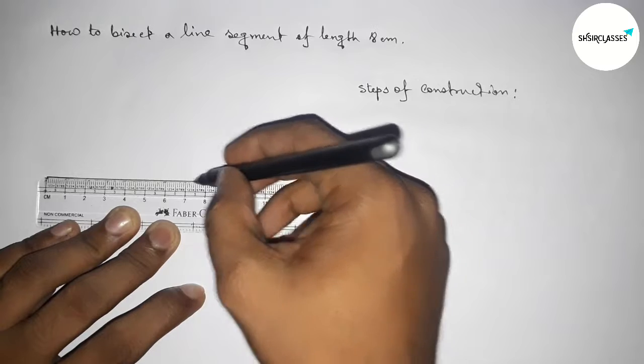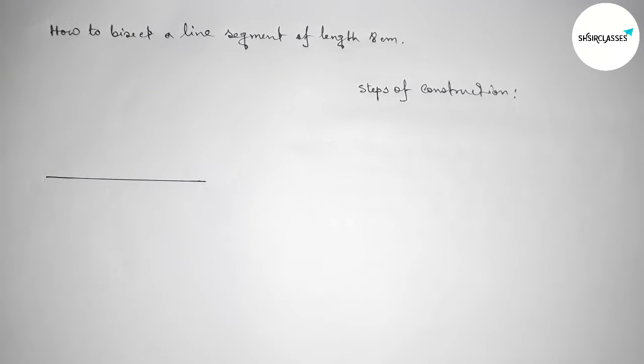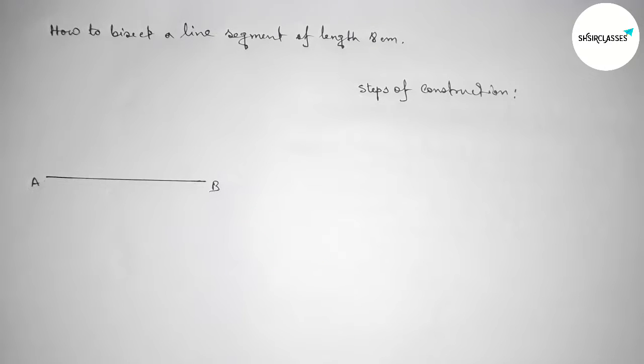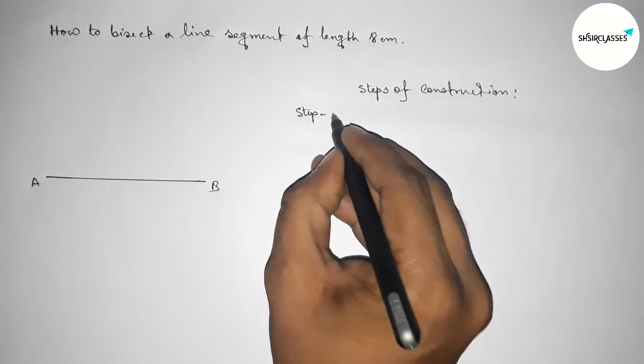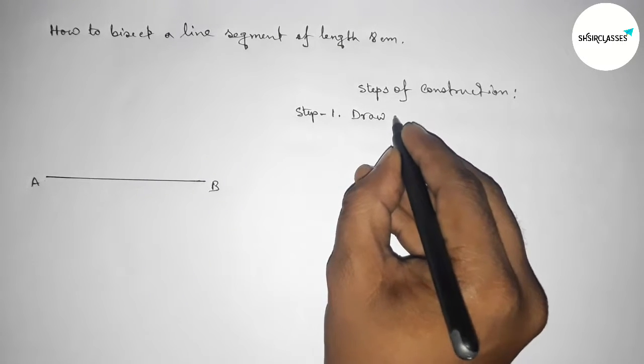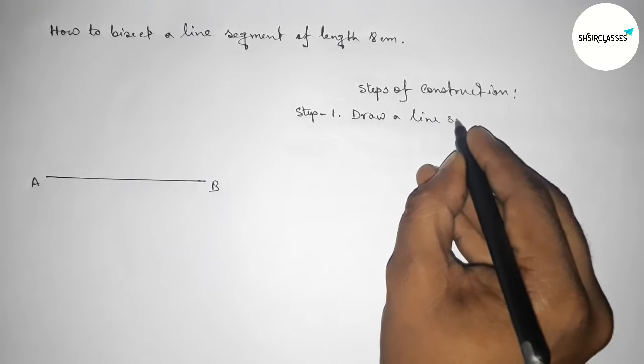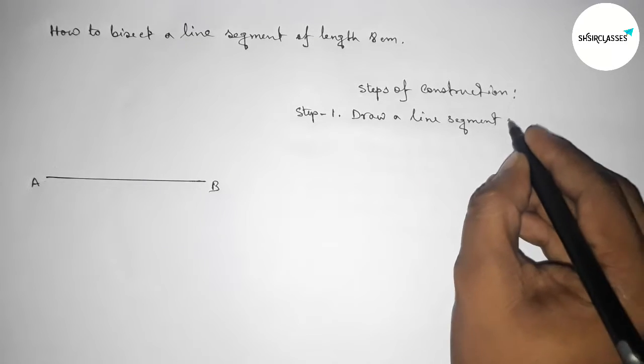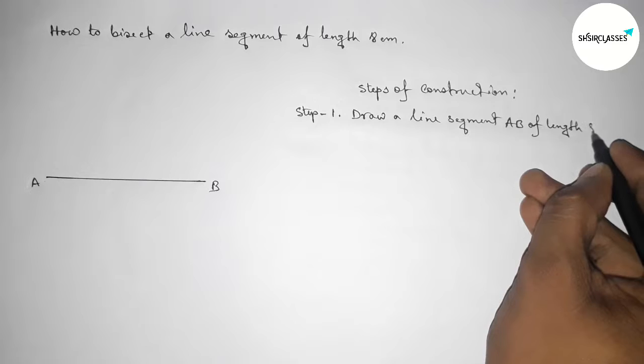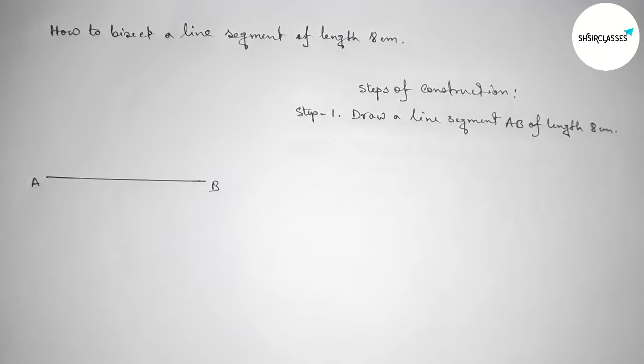A line segment of length eight centimeters. So taking point here A and here B. So step number one: first we have to draw a line segment AB of length eight centimeters by using a scale.